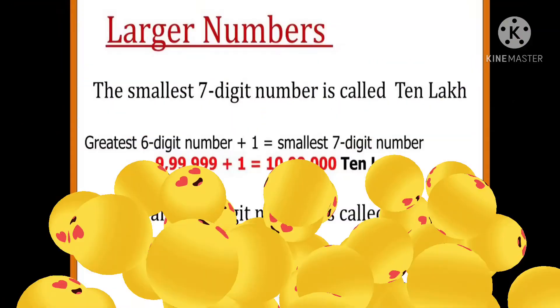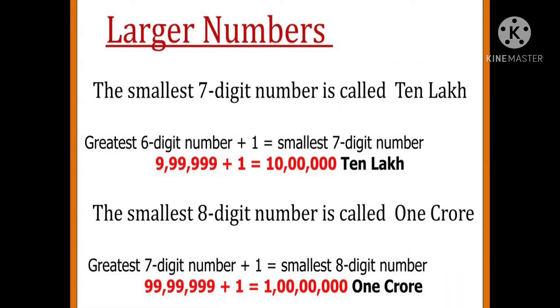Now dear students, if you want to make smallest seven-digit number, then you are to add one in greatest six-digit number. Then you will get ten lakh. Ten lakh is smallest seven-digit number. In the same way, the smallest eight-digit number is called one crore. So add one in greatest seven-digit number and that will be equal to one crore.